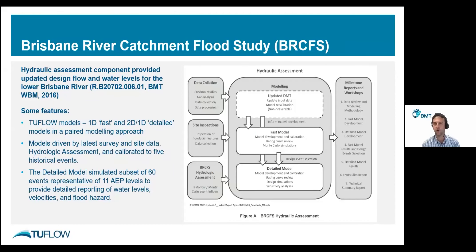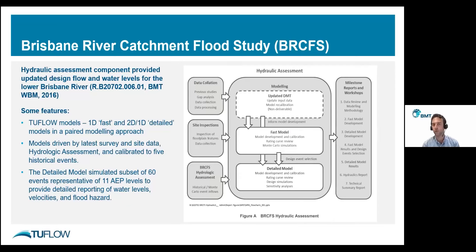One of the key data sources is the work product of the Brisbane River Catchment Flood Study conducted by BMT — a very large piece of hydraulic engineering, the subject of numerous presentations, and the report is available from Queensland government websites. The study involved development of a hydrodynamic modelling framework for a substantial portion of the Brisbane River, with boundary conditions from a detailed hydrologic assessment. The framework included a fast model used for a very large number of assessments, and a more detailed model used to simulate 60 events corresponding to annual exceedance probabilities (AEPs) ranging up to 1 in 2000. The models were calibrated to five historical flood events.